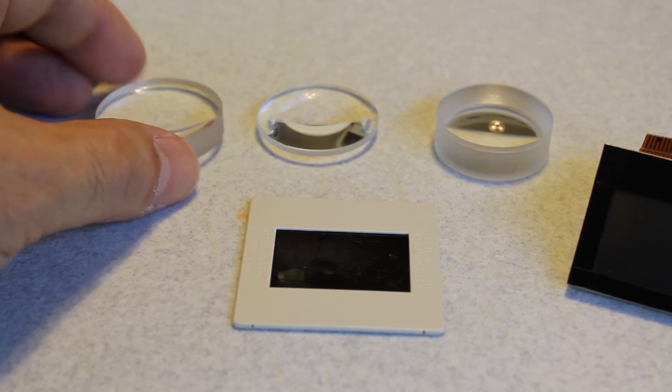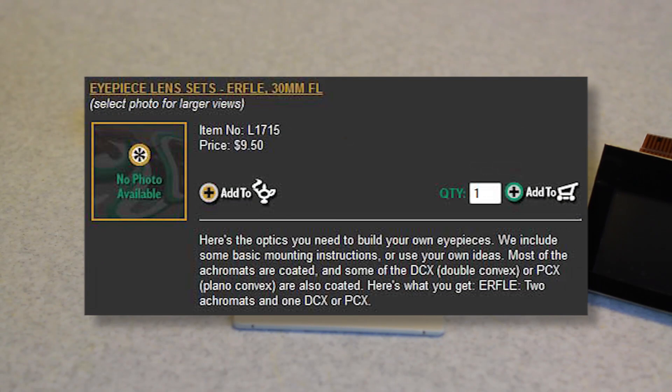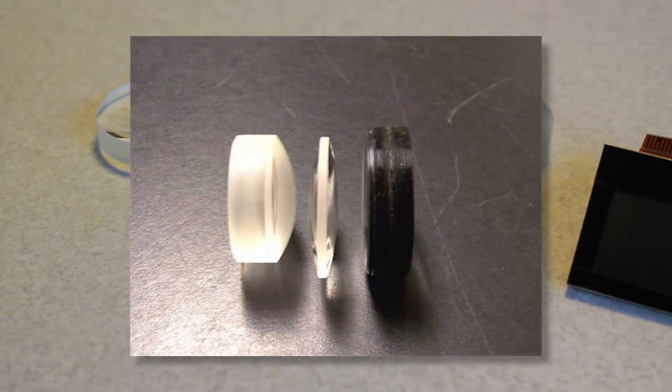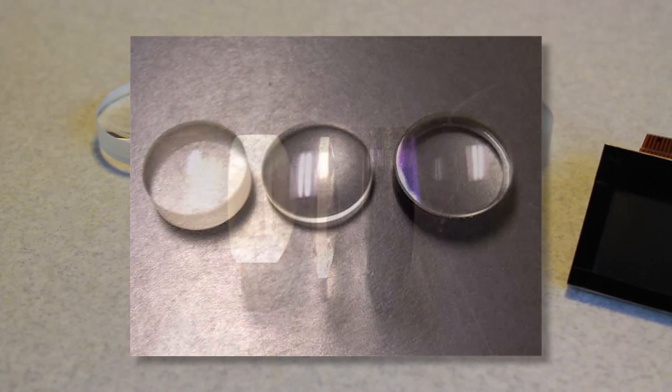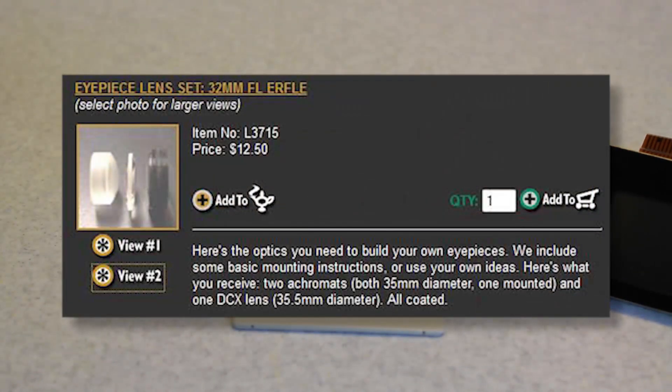This particular set of lenses here was purchased from Surplus Shed. It's their L1715. I think the whole set set me back $9.50. There's another model that's slightly different and it's an L3715 and that's about $12.50. They're both very similar designs.